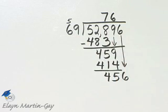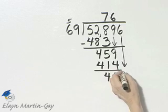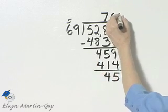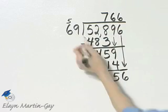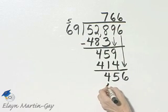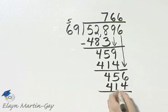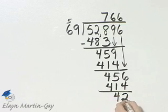Since I have 456, close to 459, let's try 6 again. We know 6 times 69 is again 414. Let's subtract: that's 2, and that's 4. That is my remainder.